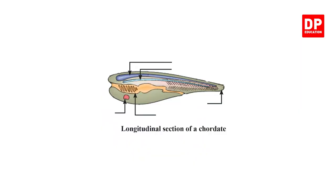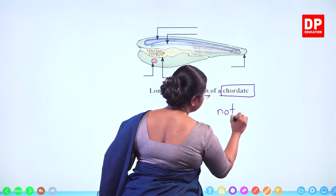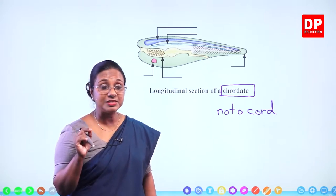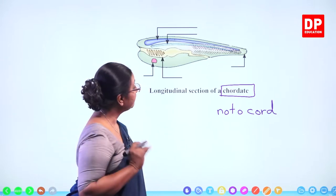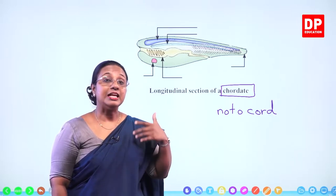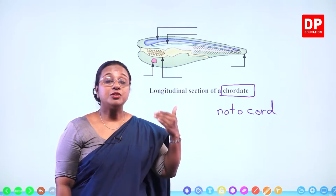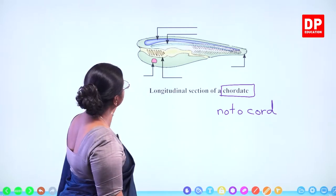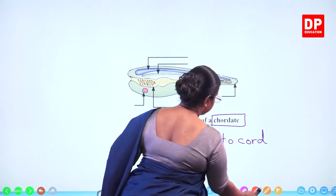Here you can see the longitudinal section of a chordate. I told you all about a notochord — a tube-like, flexible structure. If that is present in any stage of the life cycle of a certain organism, we call them chordates. In man, during the fetal stage — the embryonic development stages — we do have the notochord. But after that, the notochord is incorporated into our vertebral column, so we are vertebrates.